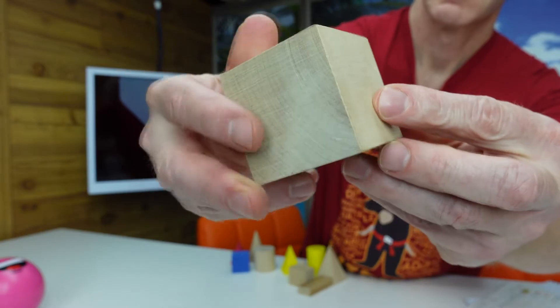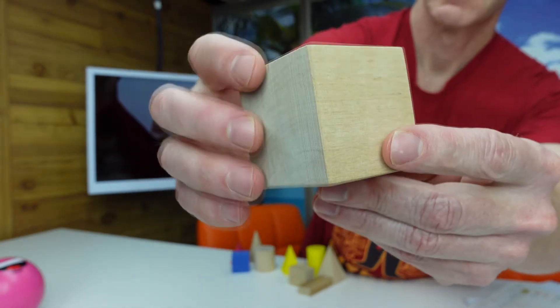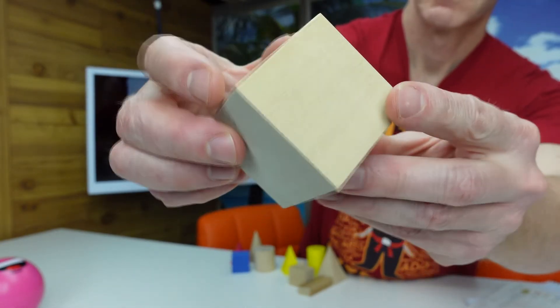This is a cube. A cube has six faces, twelve edges, eight vertices.